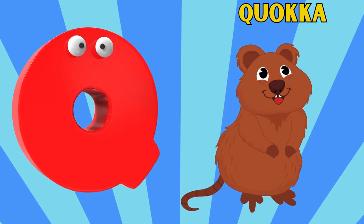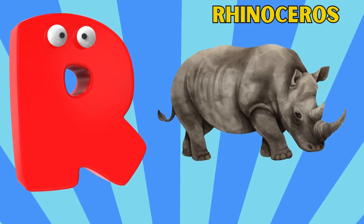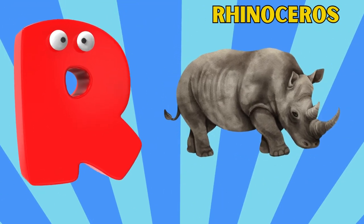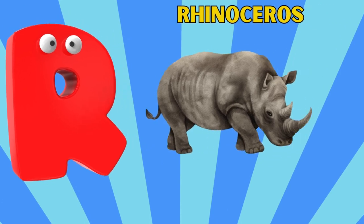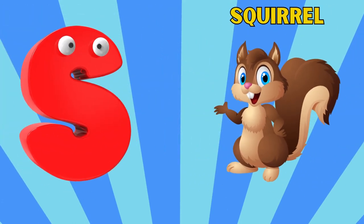Q is for Quokka. Qu, Qu. Quokka. R is for Rhinoceros. R, R. Rhinoceros.